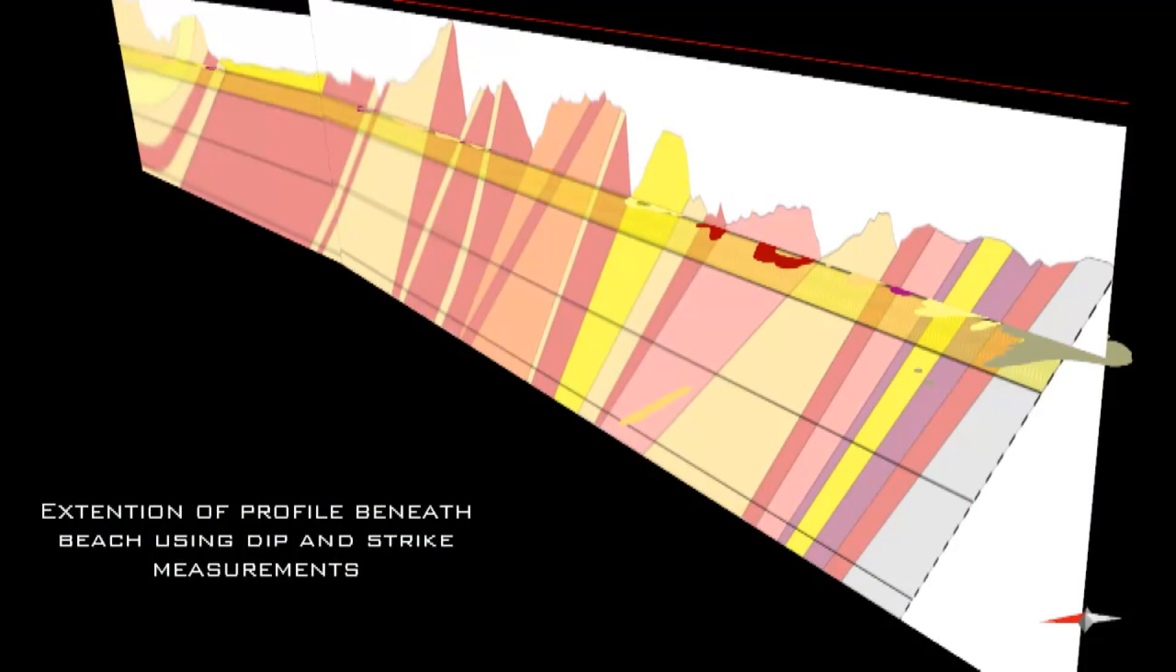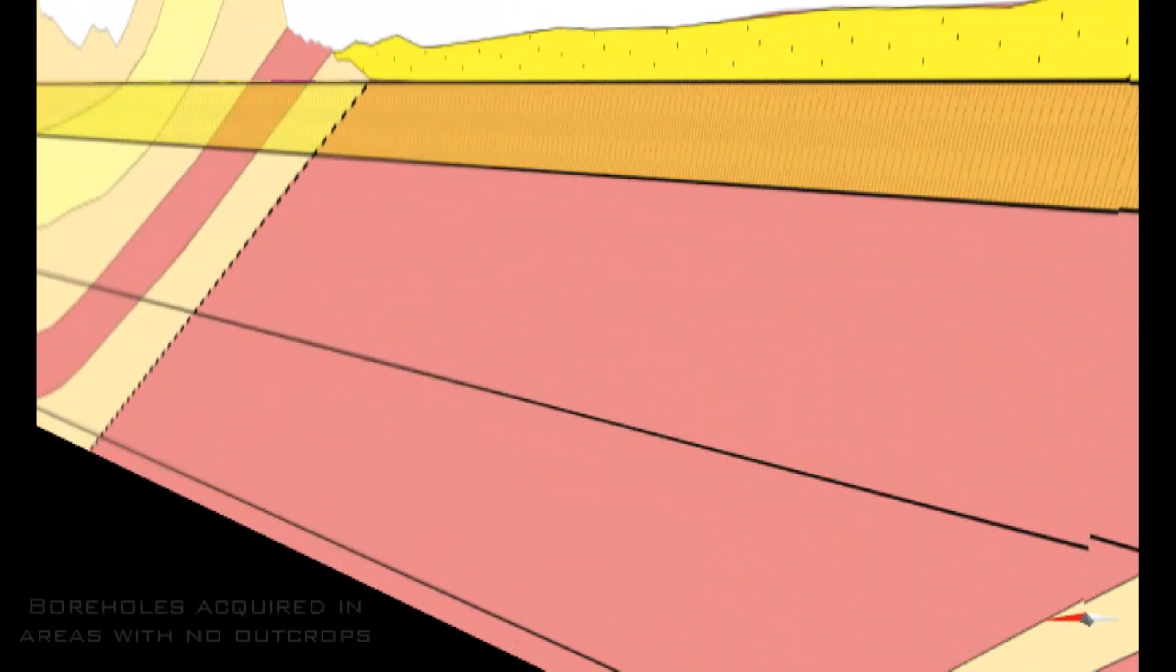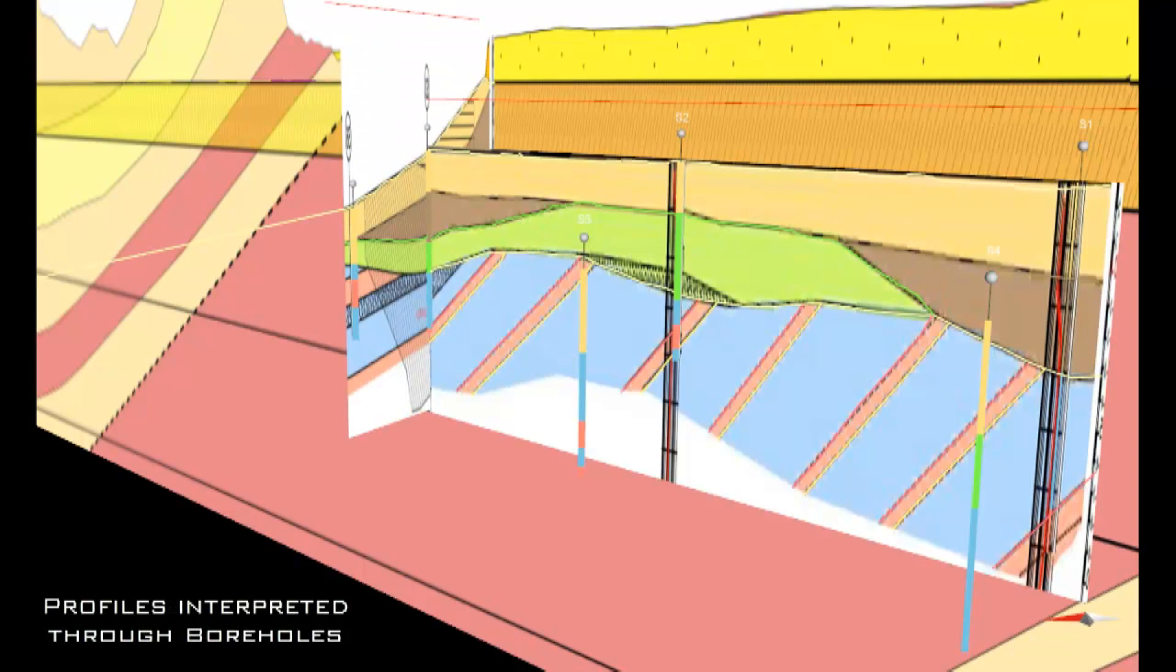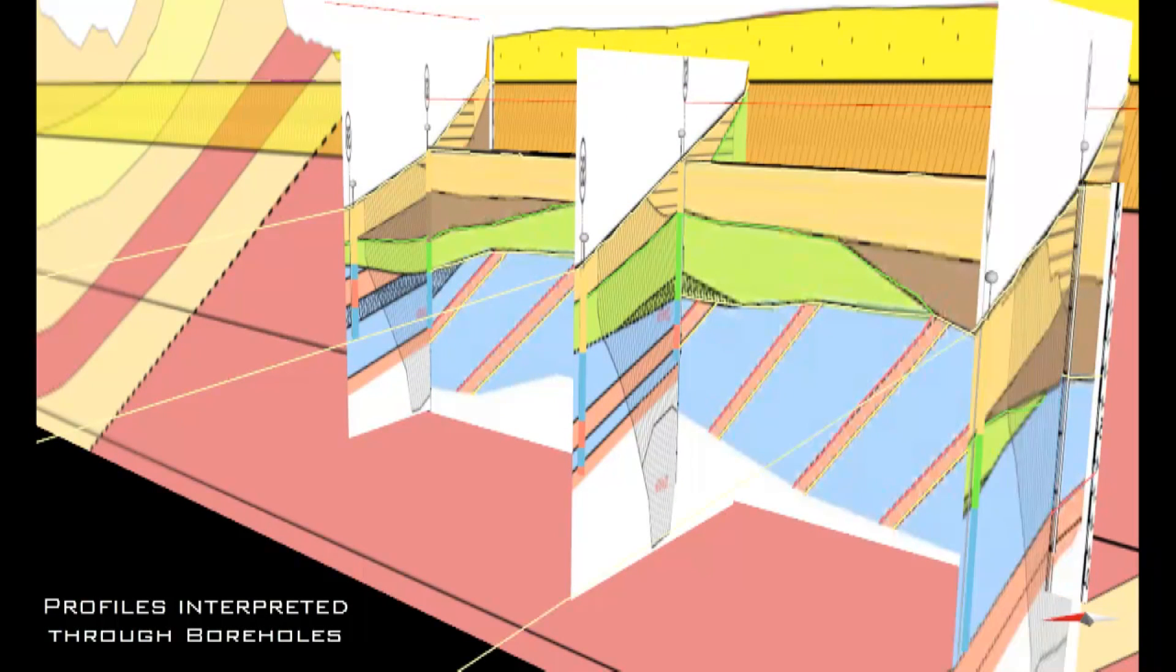The slope of the shore continues under the sand of the beach. Where there are no seashore cliffs adjacent to the beach to expose the rock strata, boreholes will be drilled on the beach to reveal the underlying geological structure.